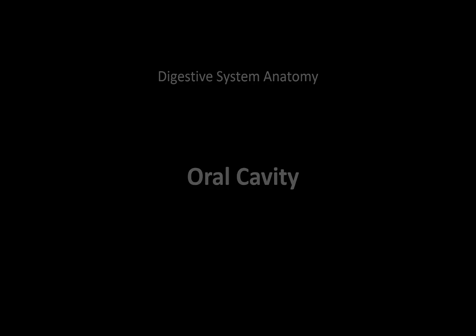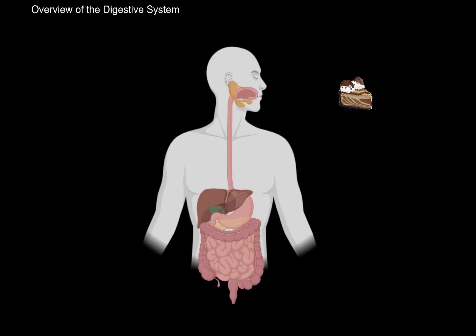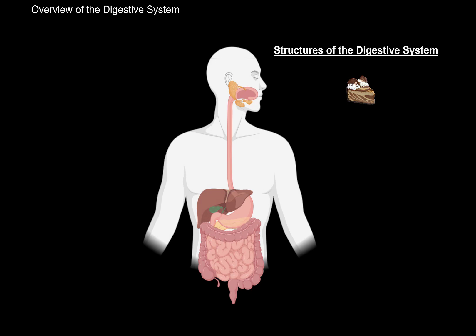And to do that, we will use this chocolate cheesecake to highlight all the structures it's going to go through within your digestive system. The reason why I chose the cheesecake is because it most probably starts you salivating because you probably want to eat it. That implies that the oral cavity is the first part of the digestive system.